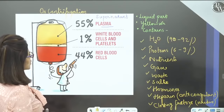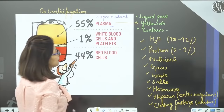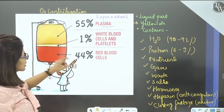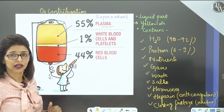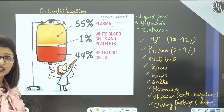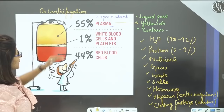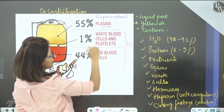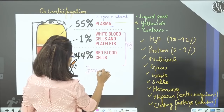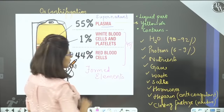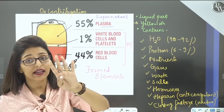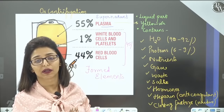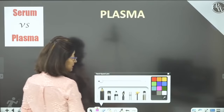Plasma ke baad, neeche do layers present hongi. Sabse neeche RBCs ki layer — RBC total 44% blood banata hai. Dono ke beech mein ek creamy color ki layer hai jo WBCs and platelets contain karti hai. Yeh together 45% banate hain — these are the cells of the blood, aur inko collectively hum bolta hain formed elements.